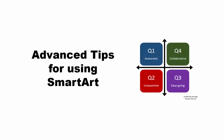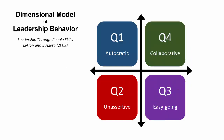Hello everyone, this is James Peterson here and today we're going to talk about advanced tips for using SmartArt. I'm going to give a presentation on leadership and talk about the dimensional model of leadership behavior. This is from a book called Leadership Through People Skills and they have a four-dimensional model that looks like this.